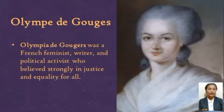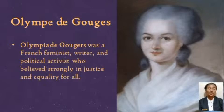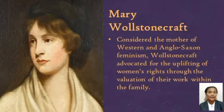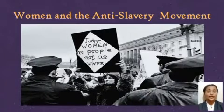Olympe de Gouges was a French feminist, writer, and political activist who believed strongly in justice and equality for all. She responded to the National Assembly's declarations by publishing in 1791 her own Declaration of the Rights of Woman and of the Female Citizen. She included women's rights in her manifesto, defending the rights of women as sentient human beings. Her progressive thinking also led her to write against slavery, the discrimination against children born out of wedlock, and the ill-treatment of orphaned children. Her manifesto inspired what can be considered the keystone text of liberal feminist thought. Mary Wollstonecraft, considered the mother of Western and Anglo-Saxon feminism, advocated for the uplifting of women's rights through valuation of their work within the family, highlighting the need for women's education. The idea that a woman is property may explain the strong connection between the women's liberation movement and the anti-slavery movement in the Western world.